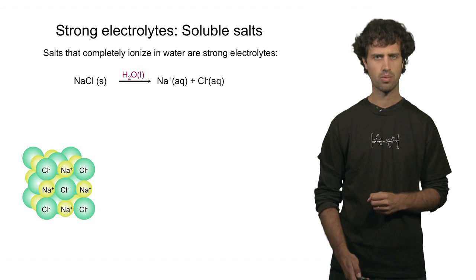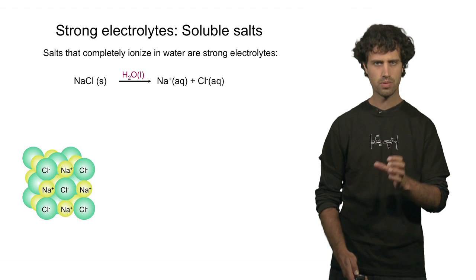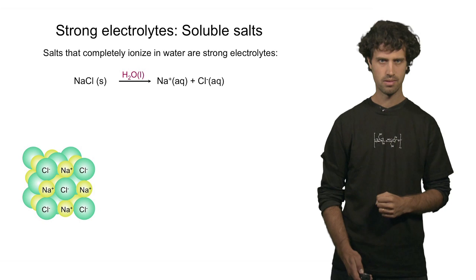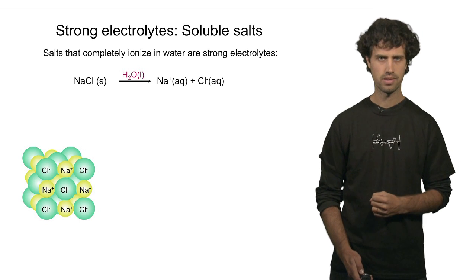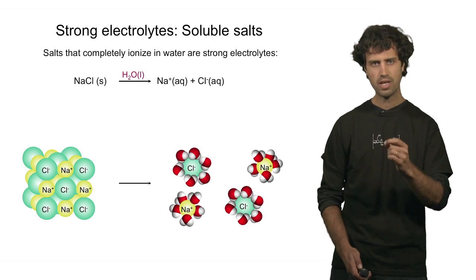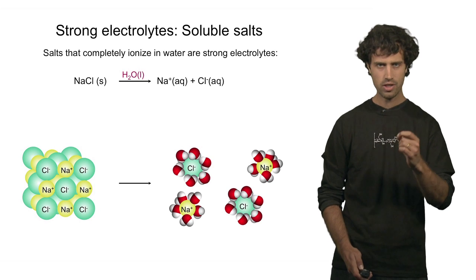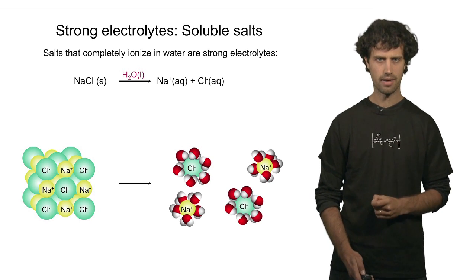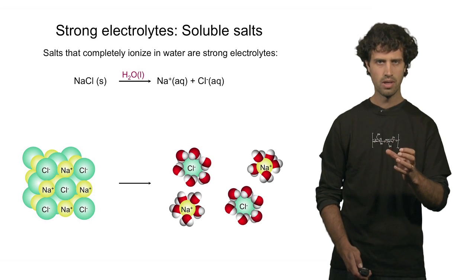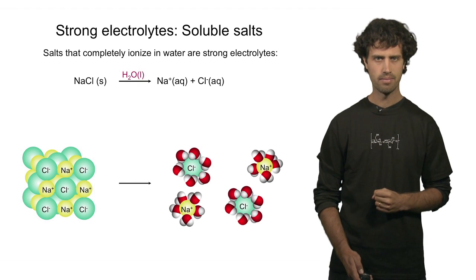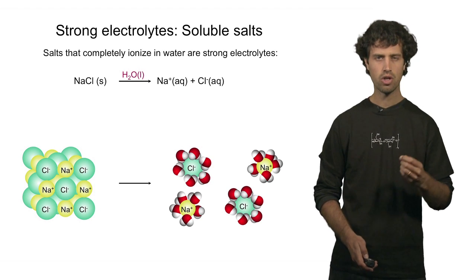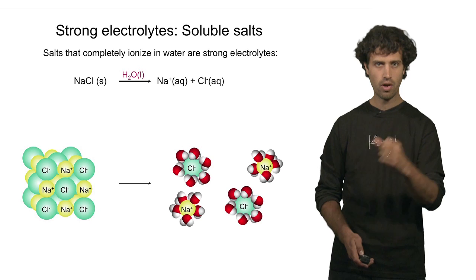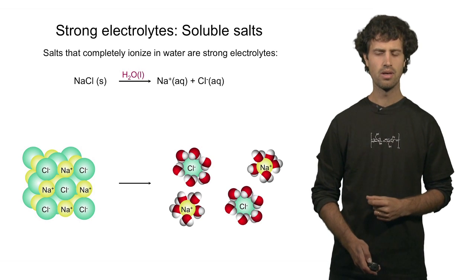Now if we bring this into contact with water, water molecules will start to impinge on the ions. Because water is a polar molecule, it can actually interact very strongly with the ions. The positive side of the polar water molecule will interact strongly with the negative charge of the chlorine ion, and these interactions can be so strong that the water molecules can encapsulate a chlorine ion, overcoming the forces that hold the lattice together. Consequently, chlorine ions can now be freely floating in solution, encapsulated by a layer of water molecules.